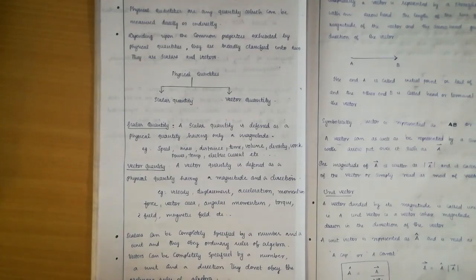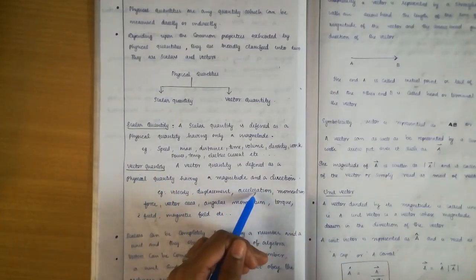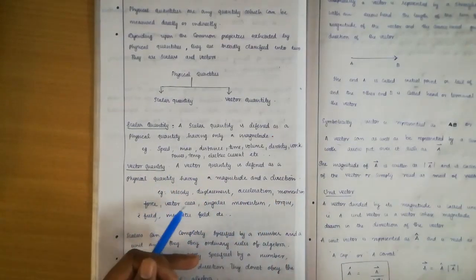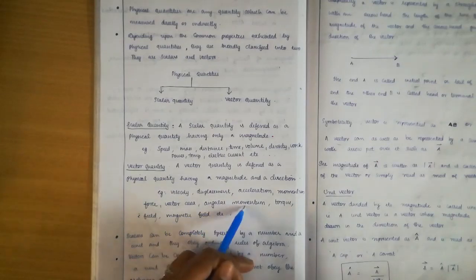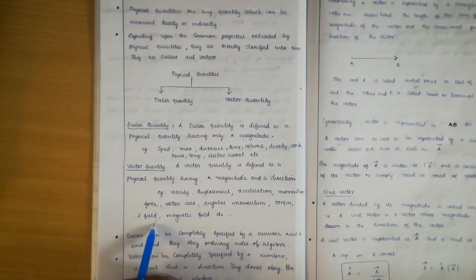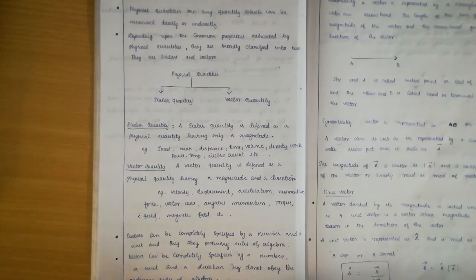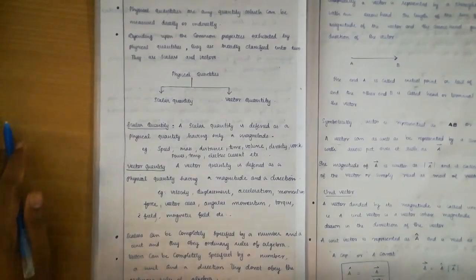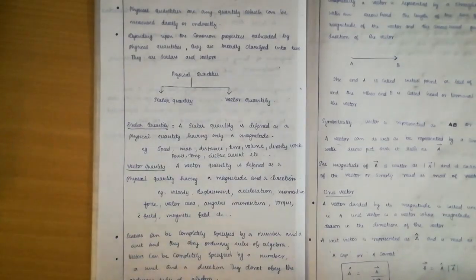That is the difference between distance and displacement. Examples of vector quantities include: velocity, displacement, acceleration, momentum, force, vector area, angular momentum, torque, electric field, and magnetic field. These are vector quantities. So we have discussed the two broad classifications of physical quantities — scalar and vector.